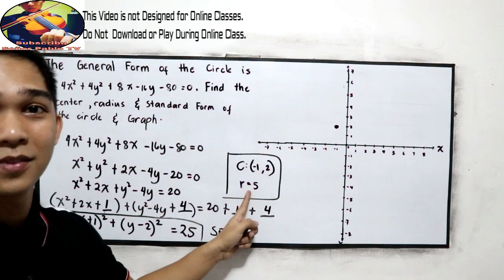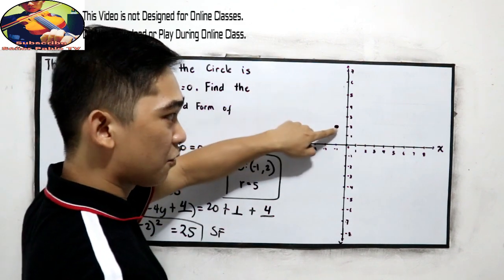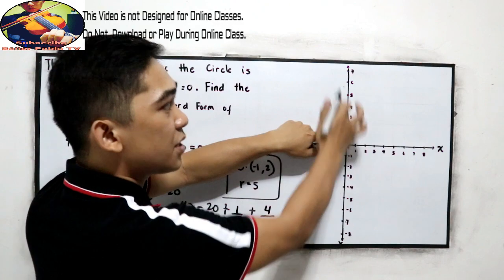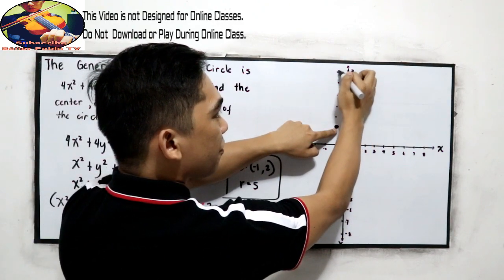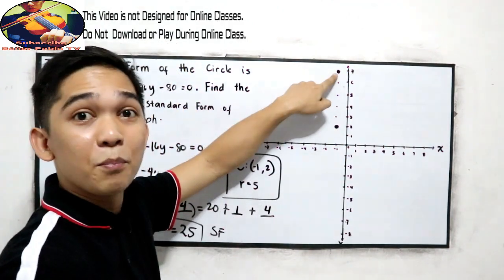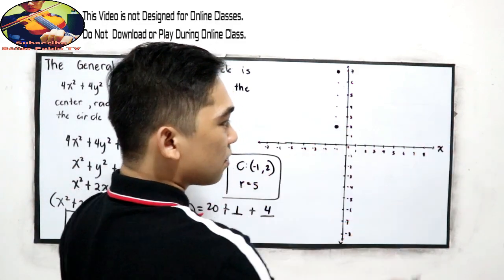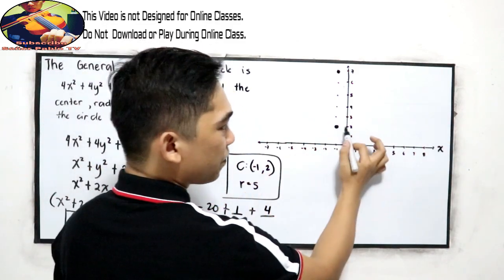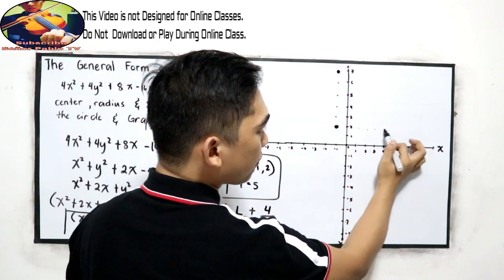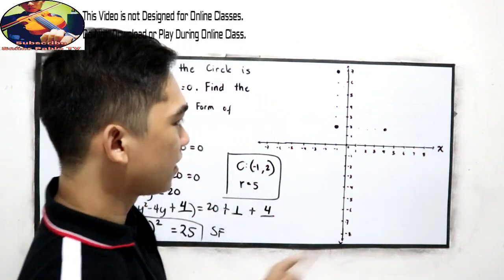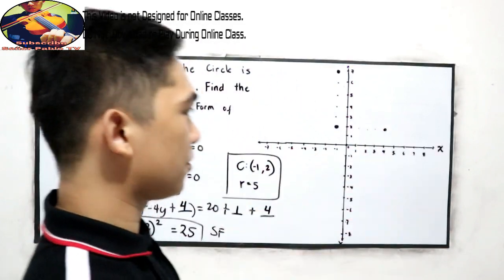Our radius is 5. To find the other points, let us count from the center, 5 units up. 1, 2, 3, 4, 5. That will be our topmost point. Rightmost, count 5 units from the center, 1, 2, 3, 4, 5. That will be 4, passing 2.